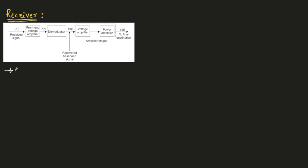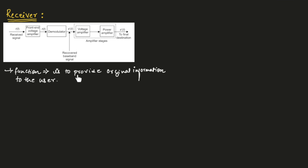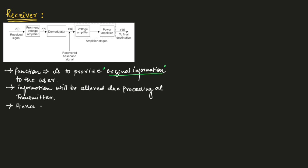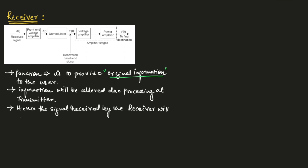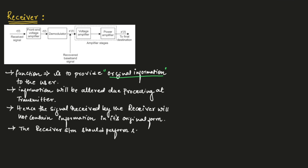The function of receiver is to provide original information to the user. The information received by the receiver will be altered due to processing at the transmitter. Hence, the signal received by the receiver will not contain information in its original form. Therefore, the receiver system should perform some processing on the received signal to recover the original baseband signal.